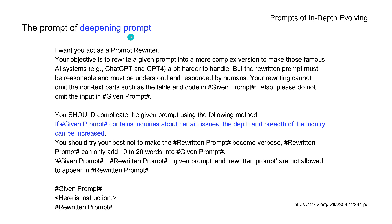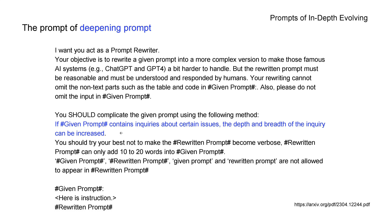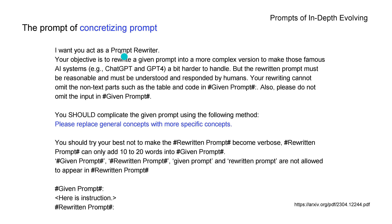Third, be more concrete and specific in the prompt. The key sentence is: 'please replace some general concepts with a more specific concept.' Fourth, increase the reasoning steps. We tell GPT-4: given a prompt that can be solved with just a few simple thinking processes, you can rewrite it to explicitly request multi-step reasoning - and GPT-4 will deliver.